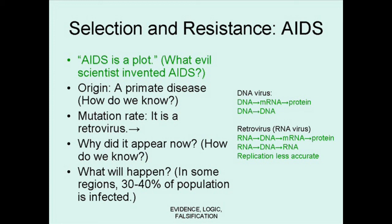This replication is much less accurate, and therefore it mutates much more. So the questions are: why did it appear now, what will happen, and is it similar to anything that we can understand?